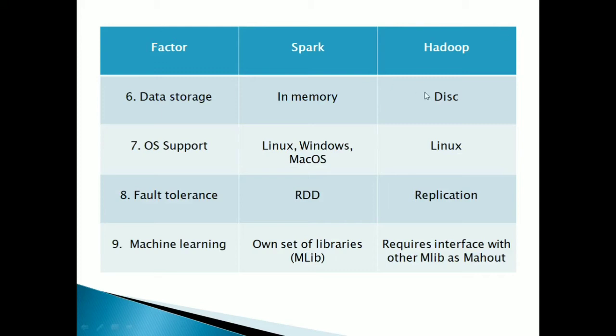The next factor is data storage. Hadoop stores data on disk using HDFS, whereas in Spark the data is stored in memory — in-memory computation is performed in Spark, so the data is stored in memory.